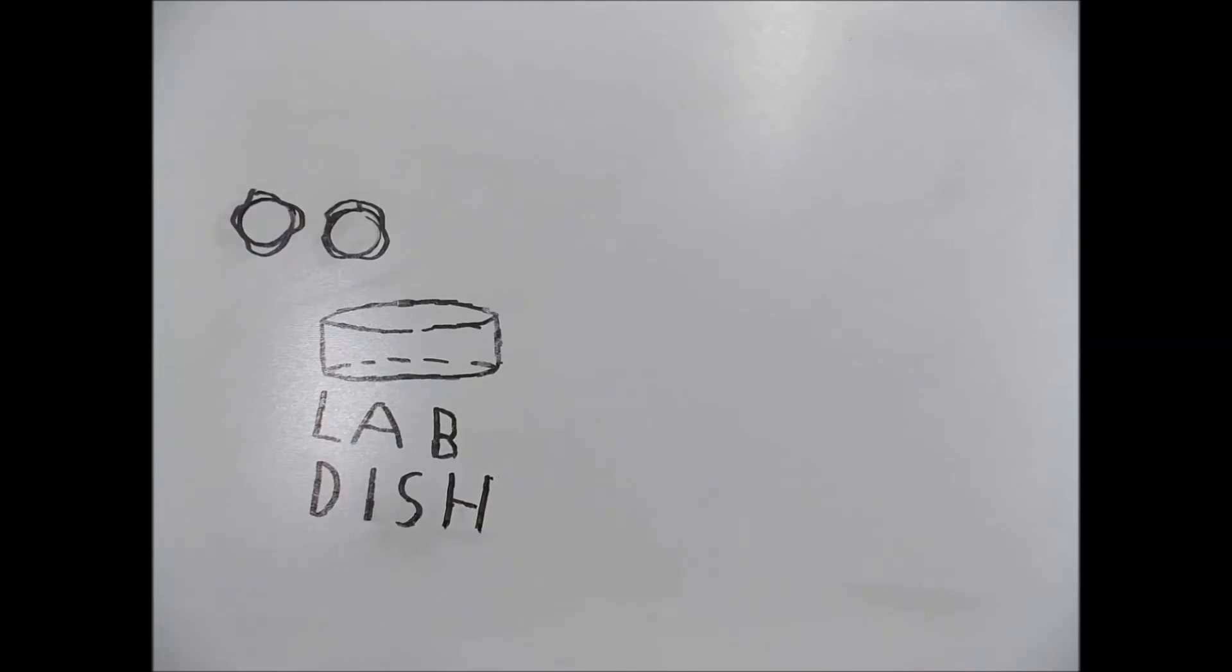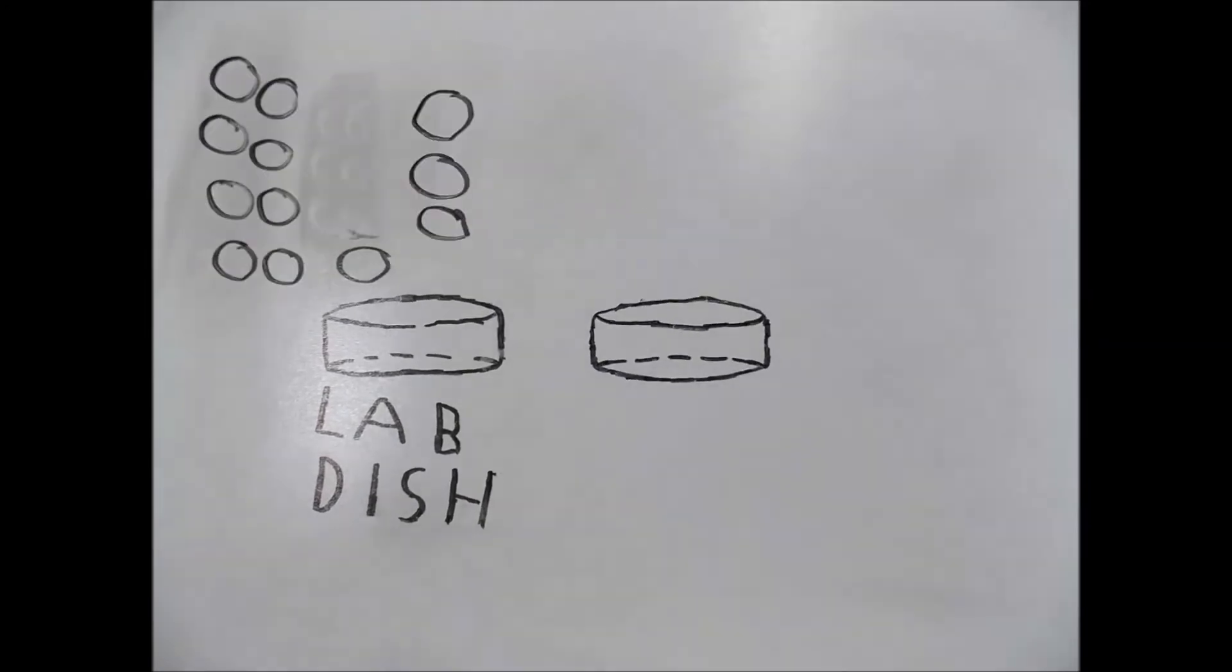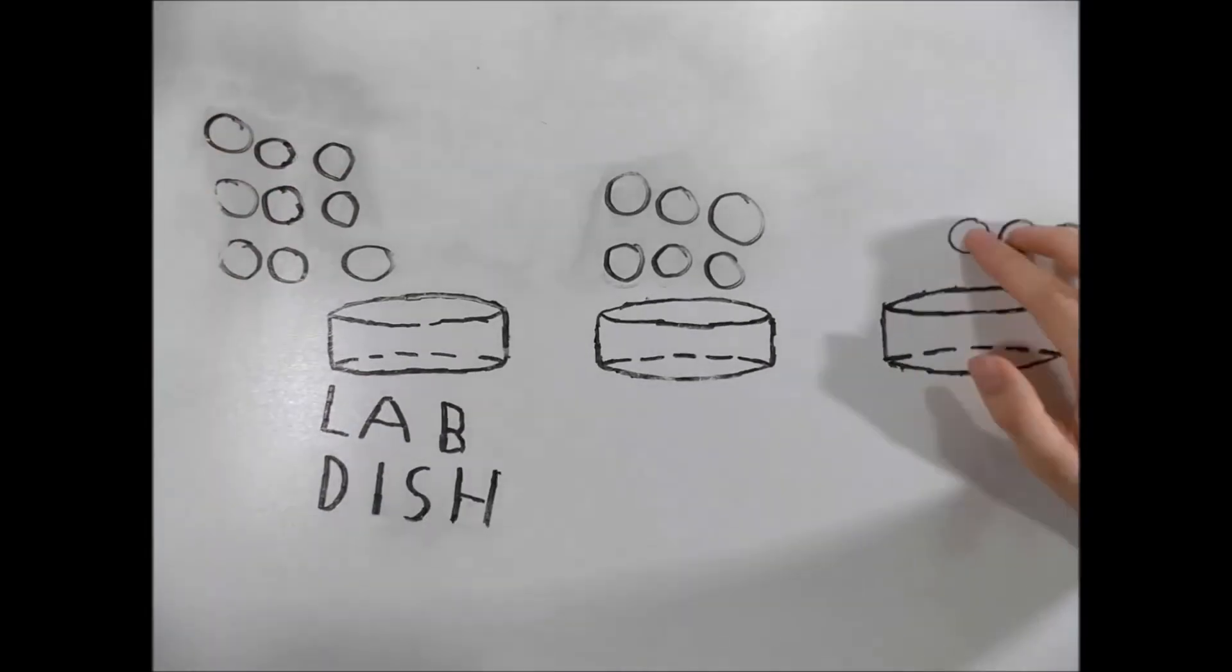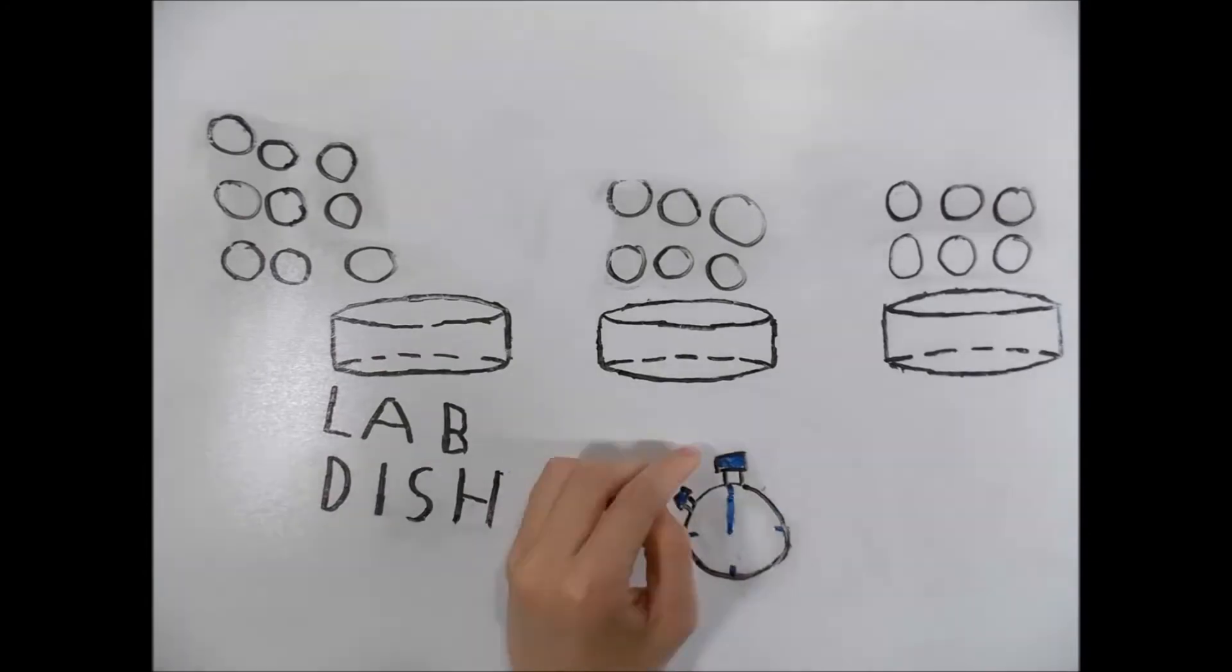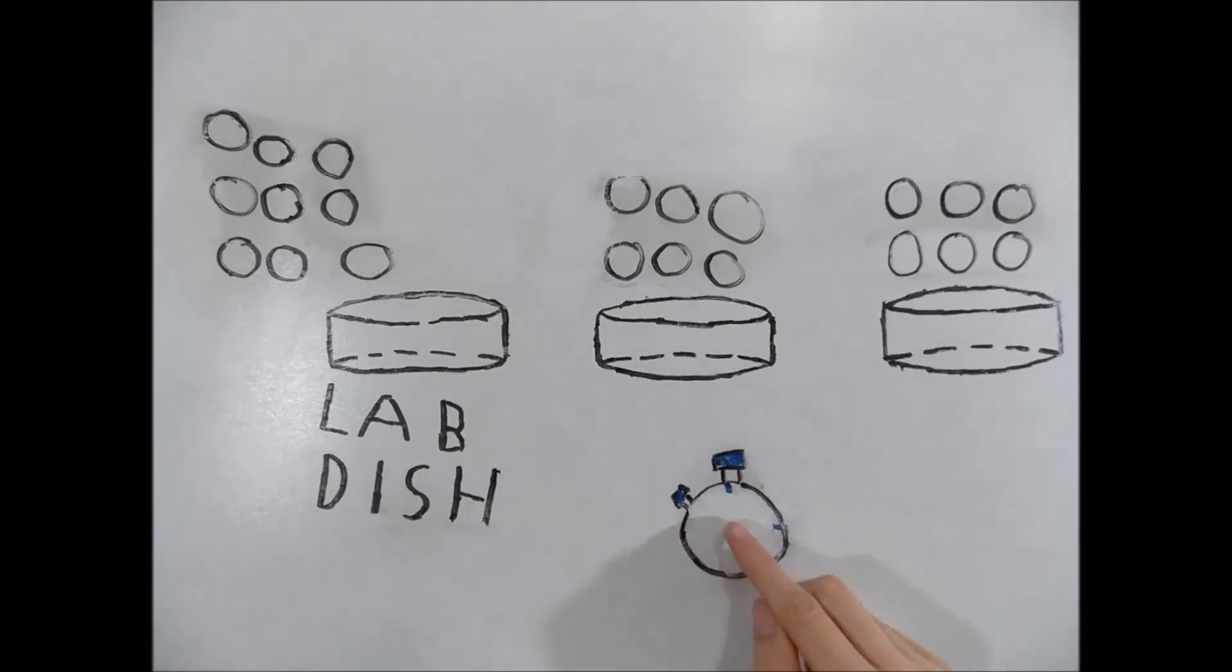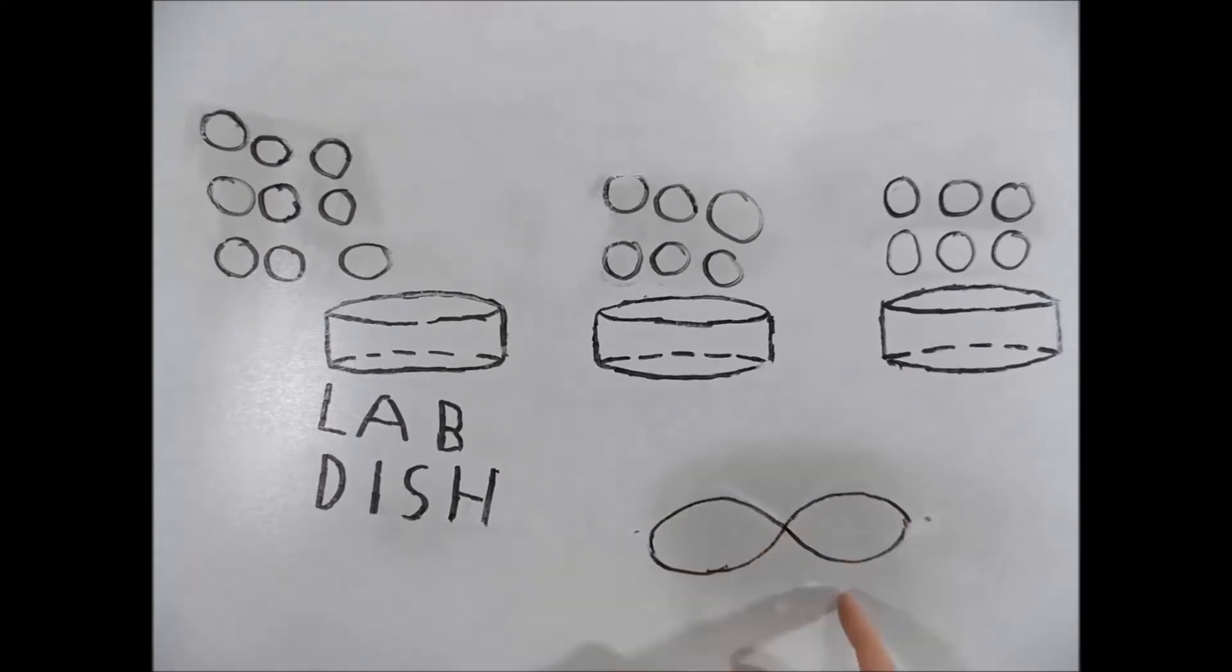If the cells survive while proliferating inside the dish, eventually the plate becomes crowded and they must be moved into several fresh laboratory dishes. This must be repeated for several months to grow a significant amount of cells, and the cells may not always survive, but the original cells may proliferate and create millions of stem cells, all without differentiating.